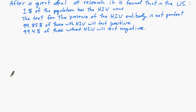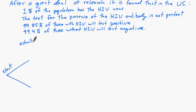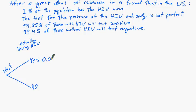We can start with our probability tree. The first event is actually having HIV — yes, you actually have HIV, or no, you don't have HIV. That 1% tells us those probabilities. If you were to randomly select a person from the U.S. population, there's a 1% chance of selecting someone with HIV, and a 99% chance of selecting someone without HIV.